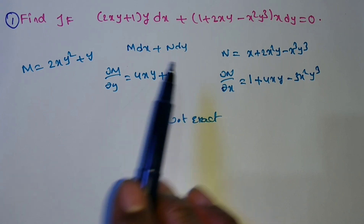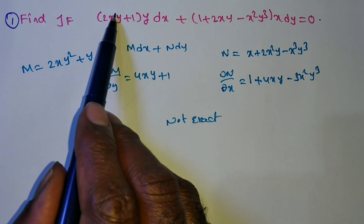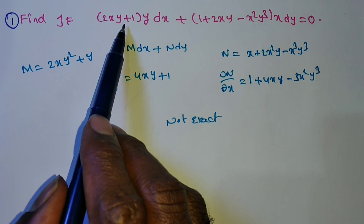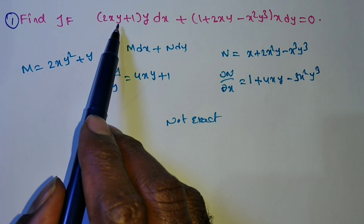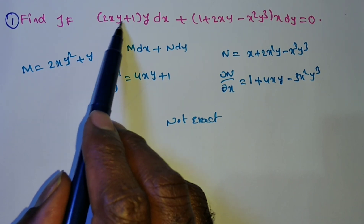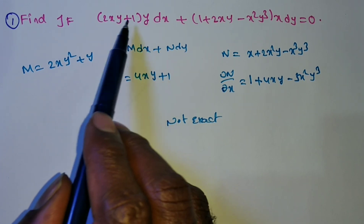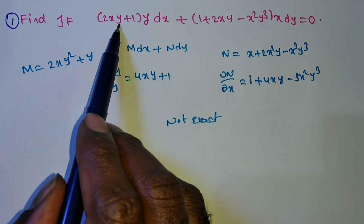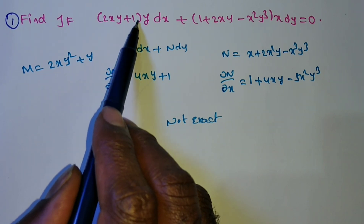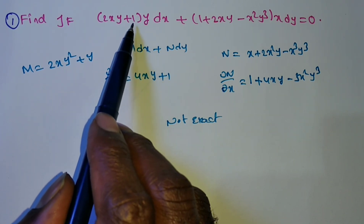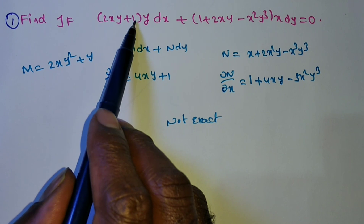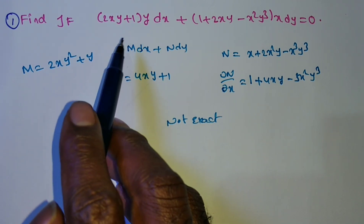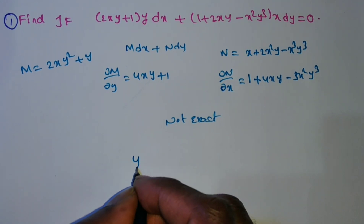Next, Rule 2: homogeneous. Homogeneous means what is the degree of each term — you have to verify. M degree and N degree should both be the same. M is homogeneous — the first term has degree 3, another term degree 1. So M is not homogeneous with uniform degree. N degree: here degree 1 and degree 3. So is it homogeneous? No, non-homogeneous.